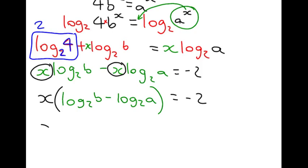Now, we're going to use our log laws again. And we're going to think we're taking away, so we can divide logs. So, it's log to the base 2 of B over A equals minus 2.